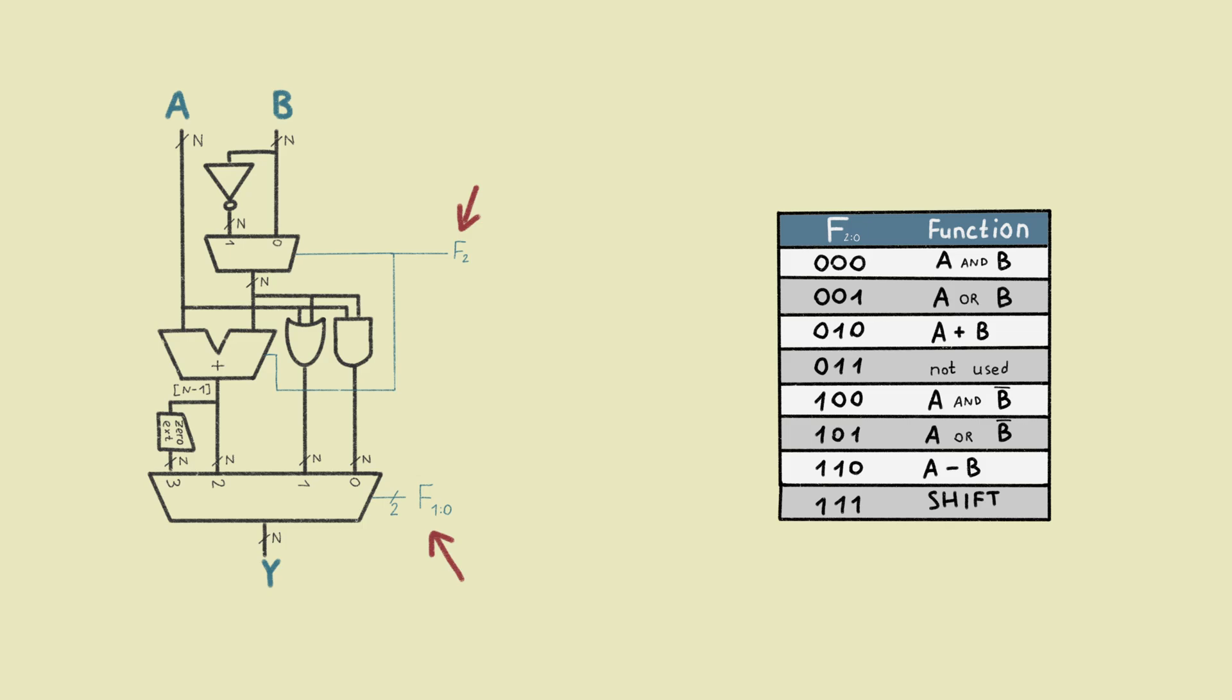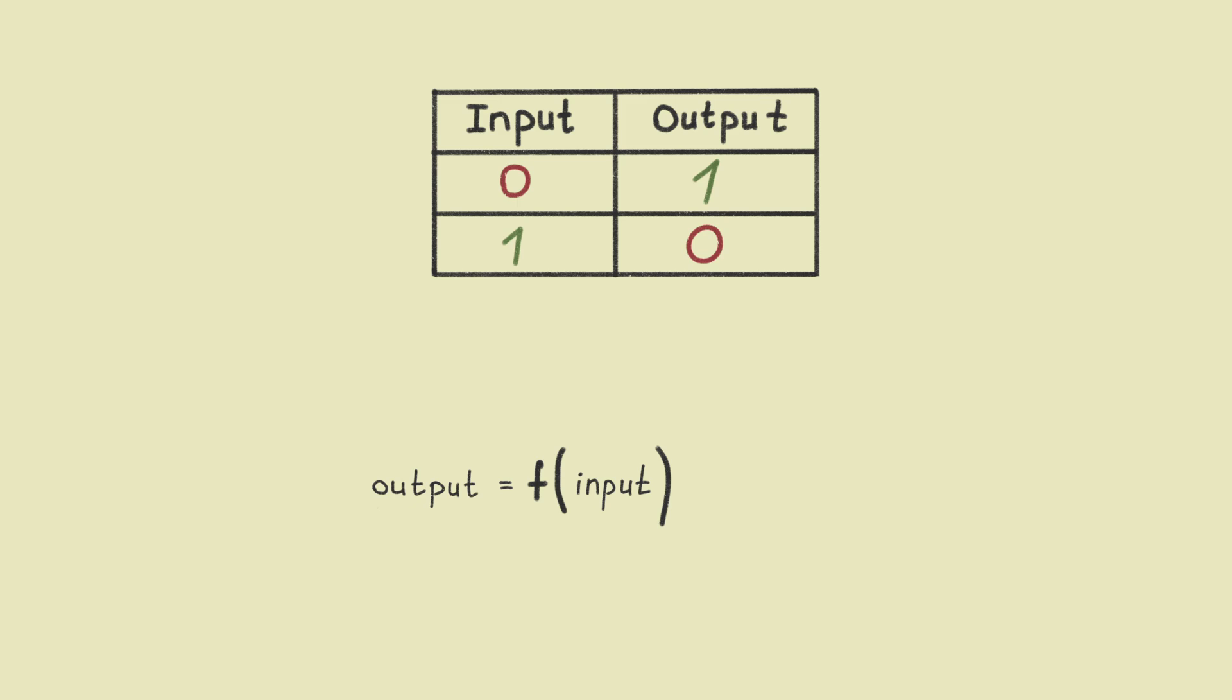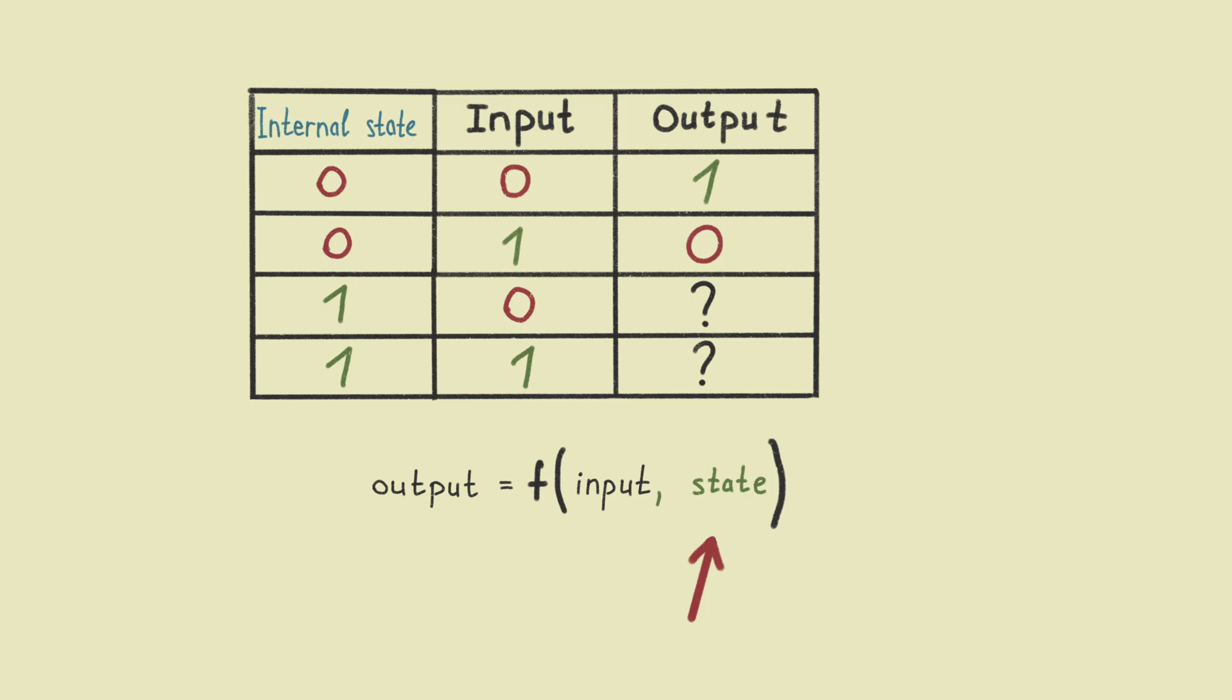Okay, so now we can build a lot of stuff. But the output of all those circuits depends only on current input values. If we want to build a processor, we need to be able to keep some internal state.